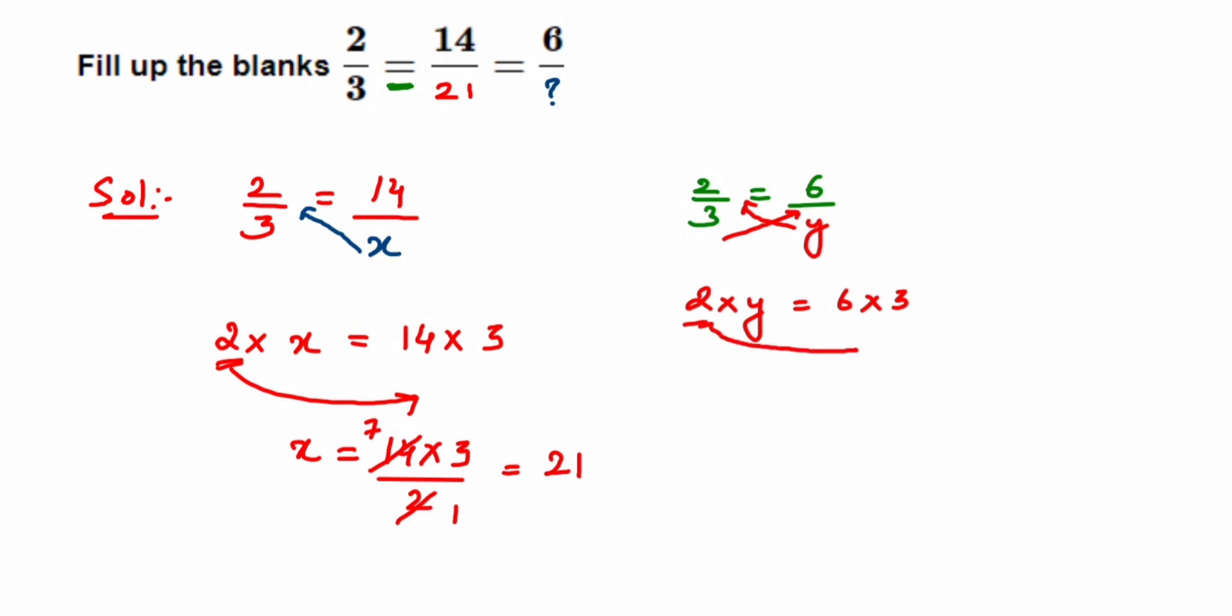Now this 2 is in multiplication, I'm going to bring it to the other side in division. So y equals 6 multiplied by 3 upon 2. Cancel the numbers: 2 threes are 6. So multiply 3 and 3, so 3 threes are 9. So y will equal 9, so here we'll get answer 9.